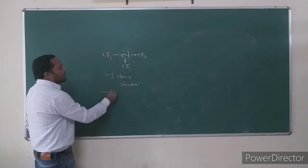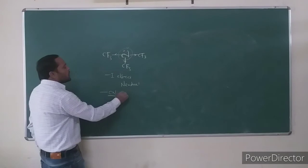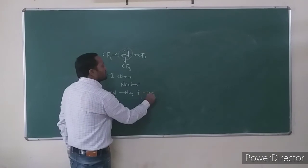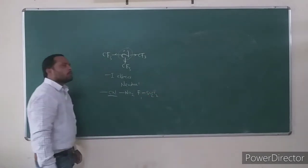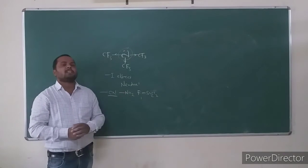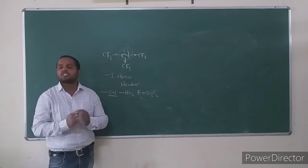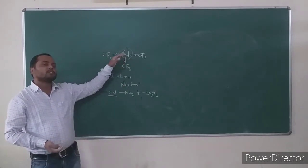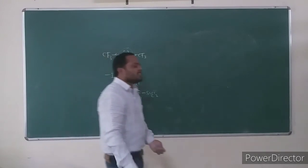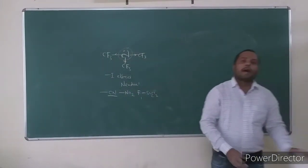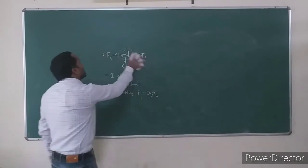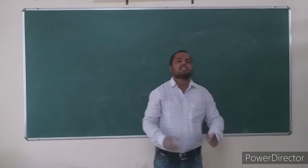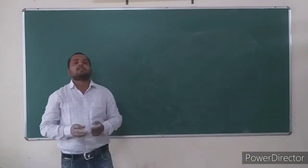If electron-withdrawing groups like nitro, cyano, or sulfonyl groups are close to the lone-pair-containing nitrogen atom, base strength generally decreases. Similarly, the −R effect also decreases basicity, just as the −I effect does.